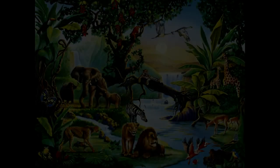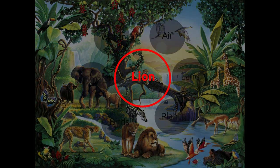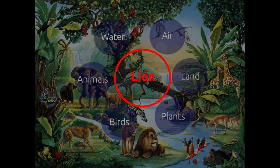Surroundings in which a person or an animal or a plant lives is called its environment. For example, for a lion in a forest, plants, birds, animals, water, air, and land are part of its environment.